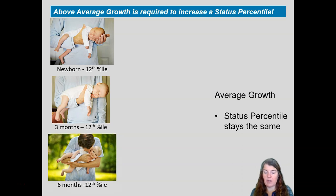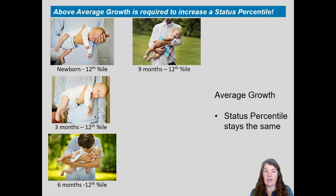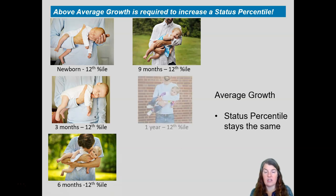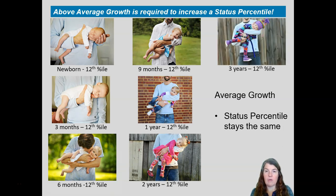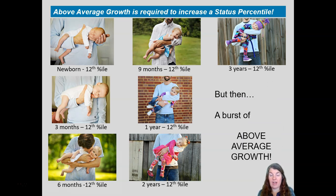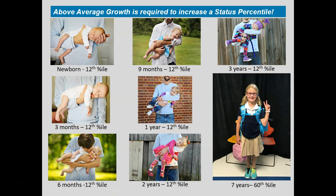We take her back at six months — she's clearly grown, but again so did all the other babies. She's growing at an average rate and stays at the 12th percentile. We take her in at nine months and the same thing happened — she's still growing but holding steady at the 12th percentile. Same thing for one year, two years, and three years. She's definitely growing, but she's holding steady at the 12th percentile because she's experiencing average growth. But then we had a burst of above average growth — and I do mean really above average growth, like call the pediatrician. Everything was fine. As it turns out, she was just growing really, really fast such that now she's actually at the 60th percentile, slightly above average for height. So it was not until she experienced above average growth that she changed her status percentile.